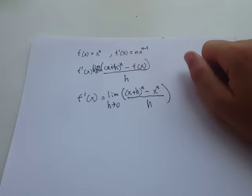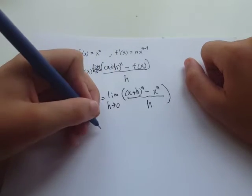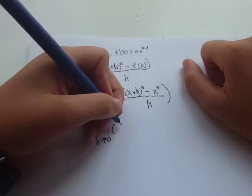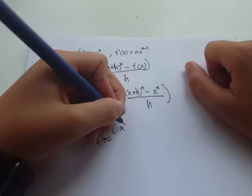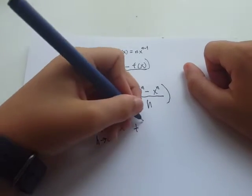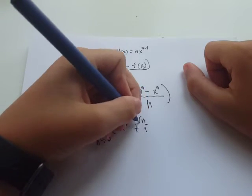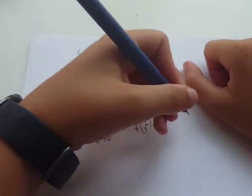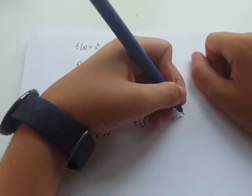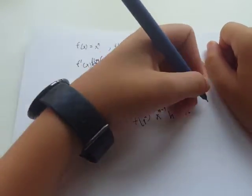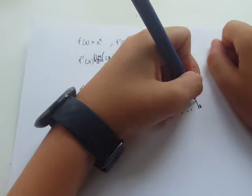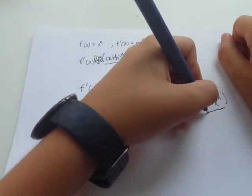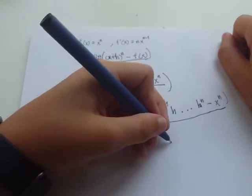So now, if we expand this binomial, it becomes limit as h approaches 0 of x to the n plus n choose 1 times x to the n minus 1 times h, then it continues on until it's just h to the n, then minus x to the n, and this is all over h.